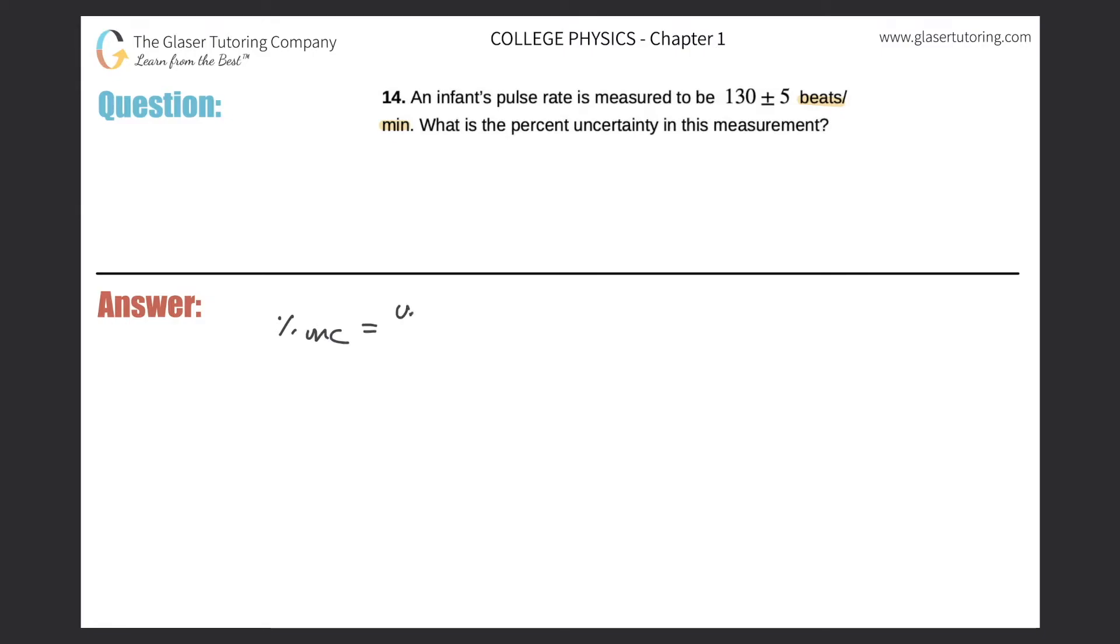would be the uncertainty associated with the measurement, so the uncertainty of the measurement divided by the actual measurement. Okay, times 100.